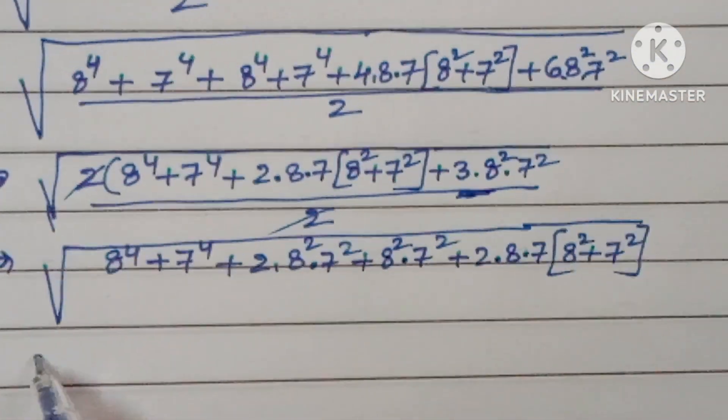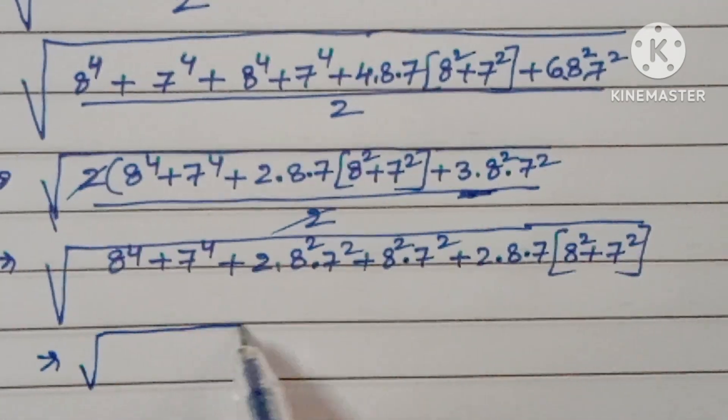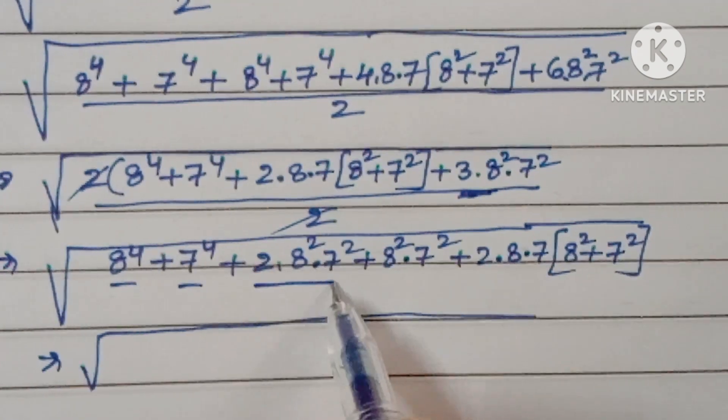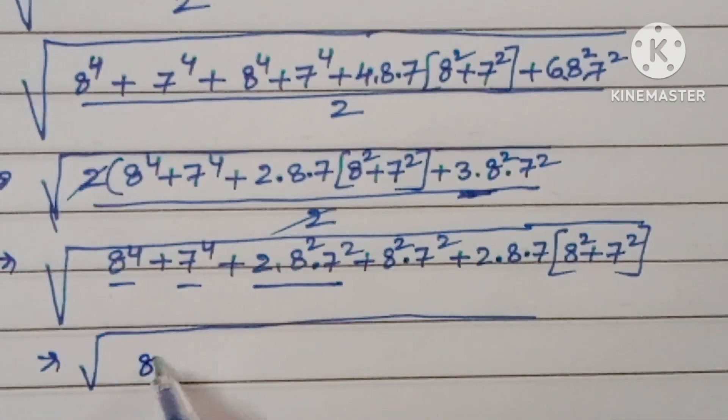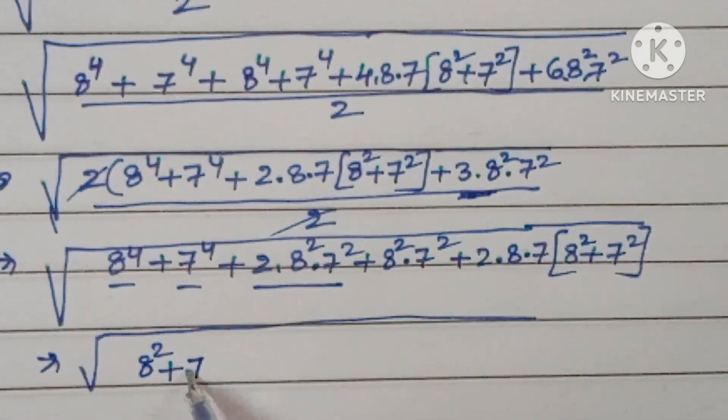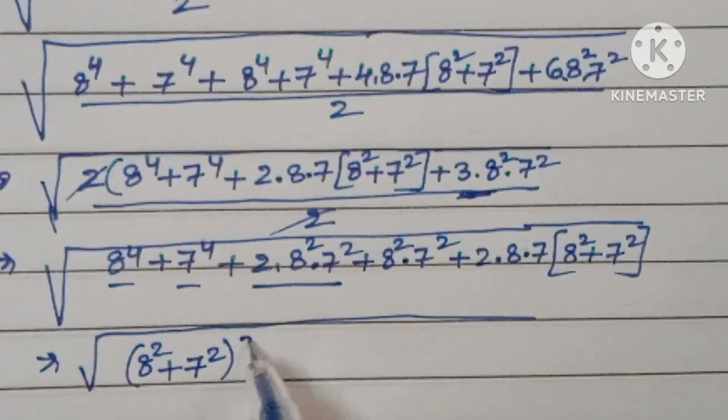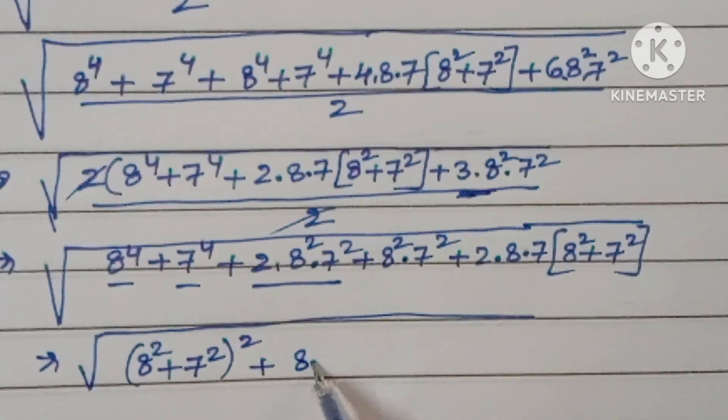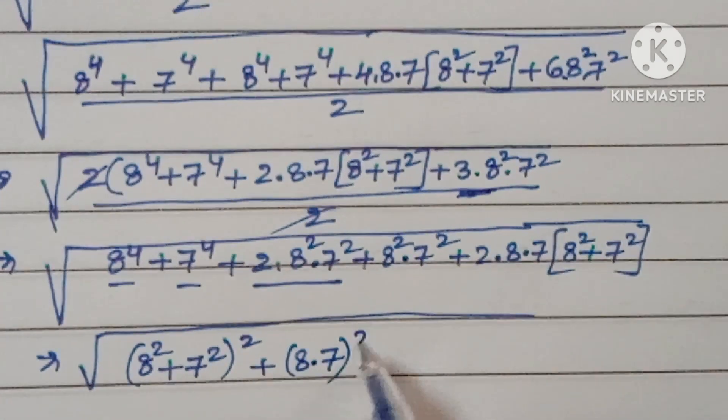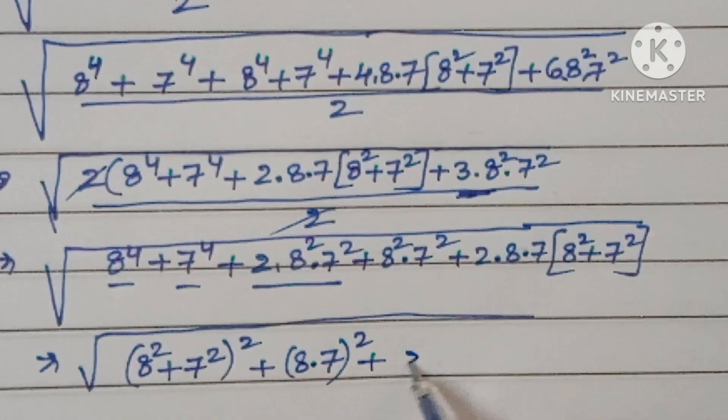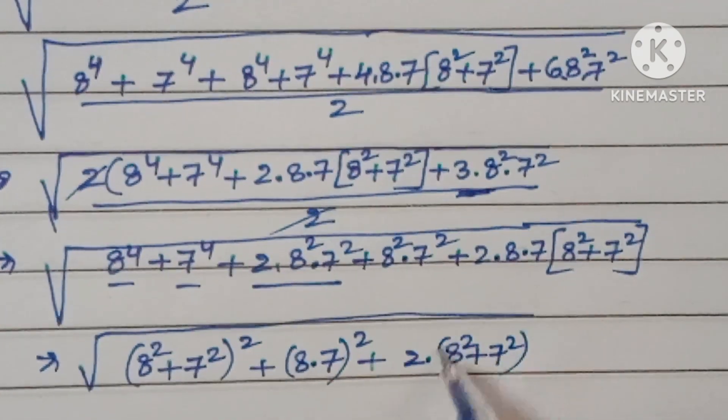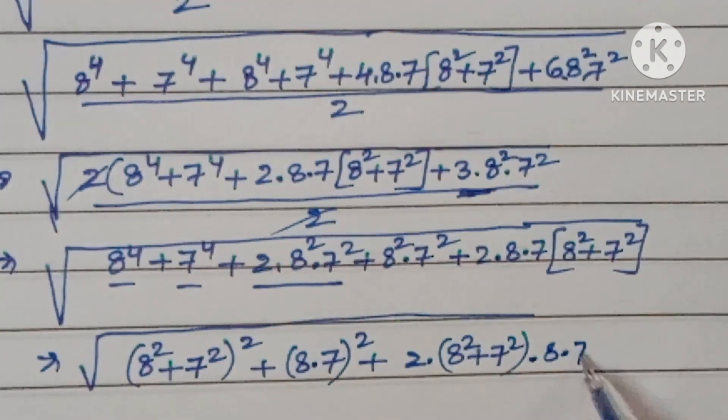This can be written as square root of a² plus b² plus 2ab: (8² plus 7²)² plus (8 times 7)² plus 2 times (8² plus 7²) times (8 times 7).